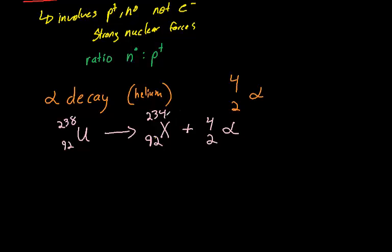And so this unknown element X is going to have 90 protons, and that means it's going to be thorium.